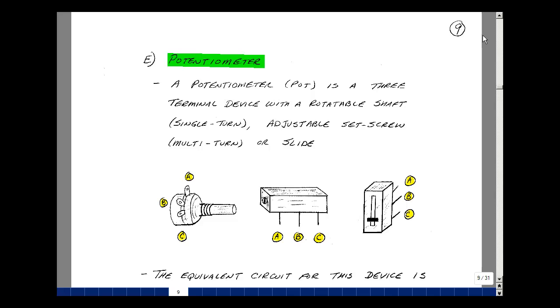In this lab, we're also going to be looking at using a potentiometer. This is a three-terminal device that has a rotatable shaft, or an adjustable set screw, or a slide. Here are three pictures that we had in the ECE 201 e-book notes.